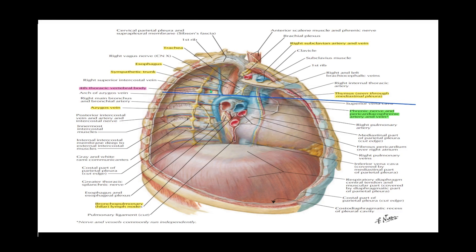Looking at this image from the Atlas of Human Anatomy by Frank Netter, I have drawn a blue imaginary line from the angle of Louis — the sternomanubrial angle — to the fourth intervertebral disc. Anything above that line is the superior mediastinum and everything below is the inferior mediastinum. You can see the thymus in the anterior mediastinum; part of it also extends into the superior mediastinum.